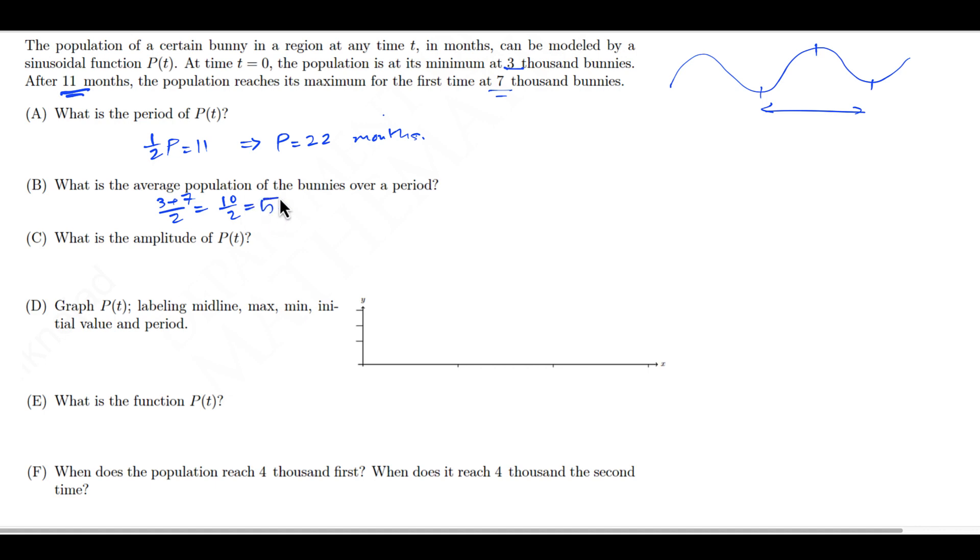Then it's asking for the amplitude of P(t). To find the amplitude, either I can go 7 minus 5, or I can go 5 minus 3, or basically 7 minus 3 divided by 2. Any of those is going to work, and all are going to give you the answer 2.